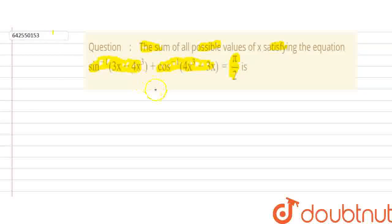In this question we are using a property. We know that sin⁻¹(x) can be written as π/2 - cos⁻¹(x). If you look at the equation carefully and take cos⁻¹(4x³ - 3x) to the right-hand side, we will get something like this equation, so we can compare.